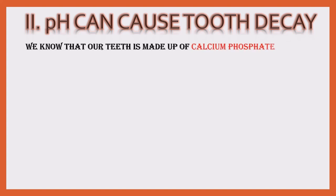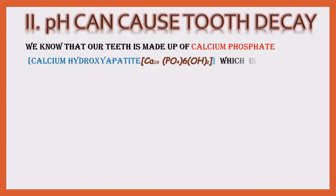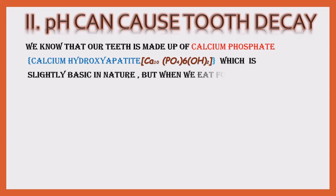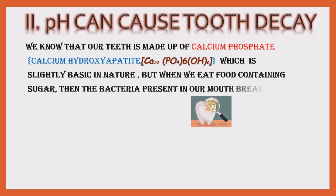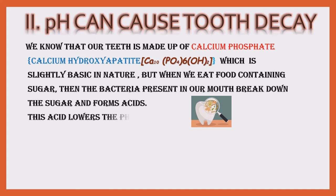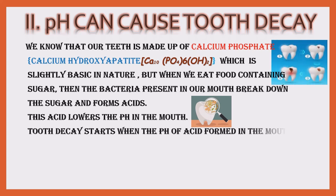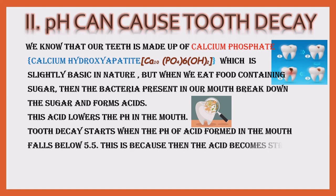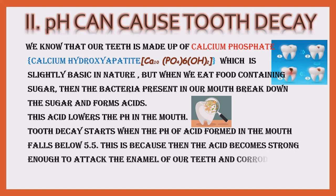pH can cause tooth decay. Our teeth are made up of calcium phosphate, generally called calcium hydroxyapatite, whose chemical formula is Ca₁₀(PO₄)₆(OH)₂, which is slightly basic in nature. When we eat food containing sugar, the bacteria present in our mouth break down the sugar and form acids. This acid lowers the pH in the mouth. Tooth decay starts when the pH of acids formed in the mouth falls below 5.5, because then the acid becomes strong enough to attack the enamel of our teeth and corrode it, setting into decay.